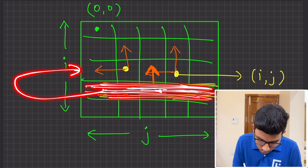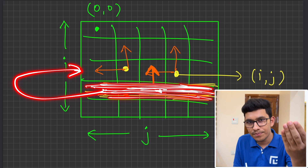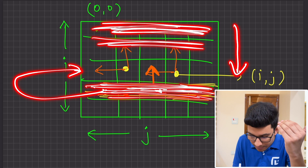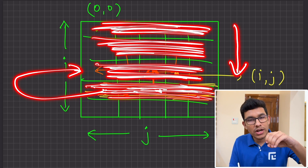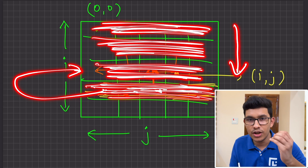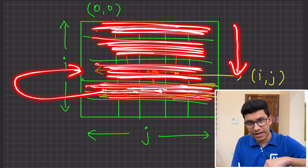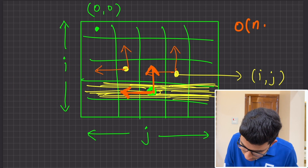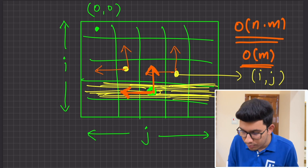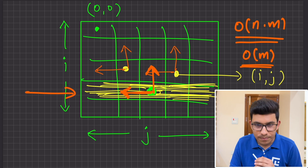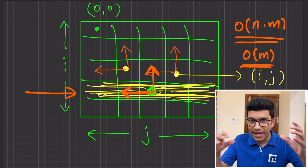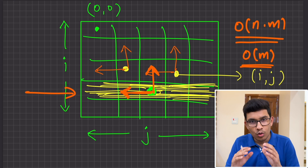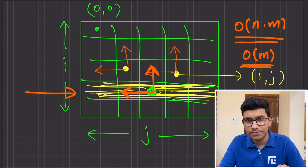If we fill the grid row by row, for each row we only need the answers from the previous row — not any row above that. So instead of storing an O(N×M) grid, we can reduce to just O(M) memory at any point. Time complexity is unchanged, but space is reduced.